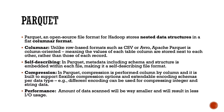Parquet is an open source file format for Hadoop that stores nested data structures in a flat columnar format. Unlike row-based formats such as CSV or Avro, Apache Parquet is column-oriented, meaning the values of each table column are stored next to each other rather than those of each record. In Parquet, metadata including schema and structure is embedded within each file, making it a self-describing file format.